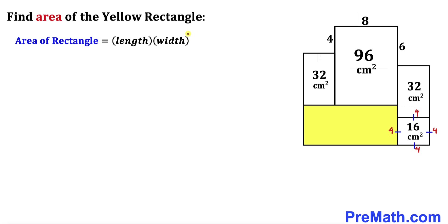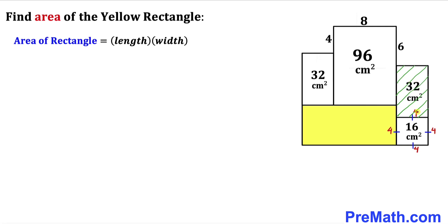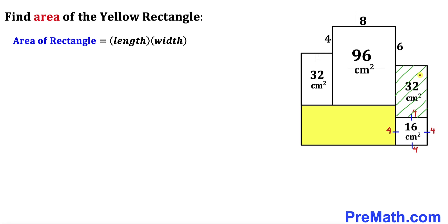Let's recall the area of rectangle formula: area equals length times width. Now let's focus on this shaded rectangle — we know the area is 32 and its width is 4, so therefore its length has got to be 8, because 8 times 4 gives us 32. Since we are dealing with this rectangle, this side length is going to be equal to the opposite side length, so that side is 8 as well.